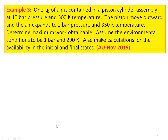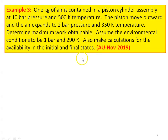Example number 3 from the November 2019 question paper: 1 kg of air in a piston-cylinder assembly at 10 bar and 500 K. The piston moves outward and air expands to 2 bar and 350 K. Determine maximum work obtainable. Assume environmental conditions to be 1 bar and 290 K. Also calculate availability at initial and final states. This is a non-flow process.